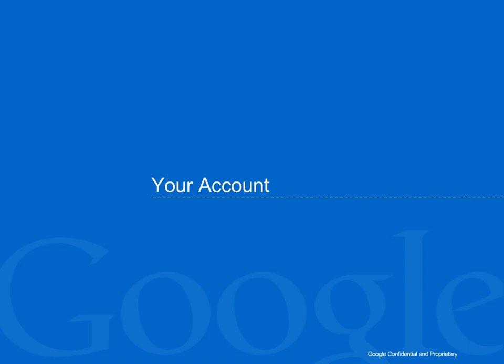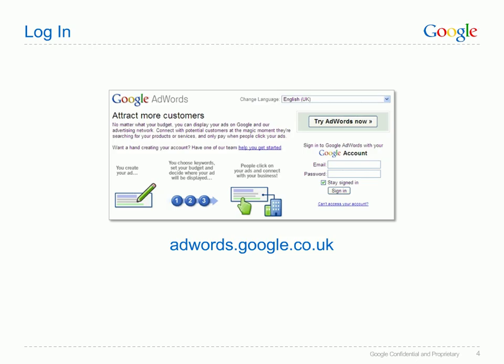To log into your account, visit adwords.google.co.uk and enter the username and password you used when you created your account. If you've forgotten your details, just click on the 'Can't access your account' link below the login area. If you use bookmarks, you may want to bookmark this page so you can easily find your AdWords account whenever you want to review it.